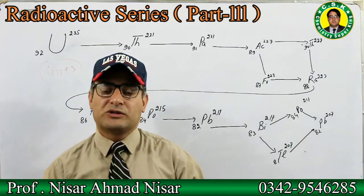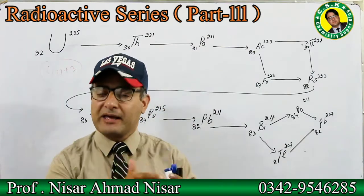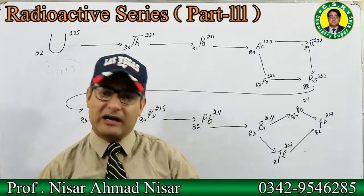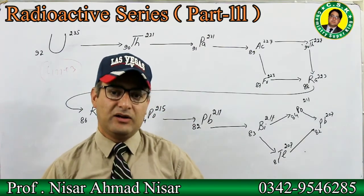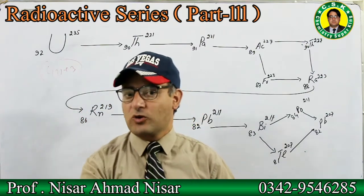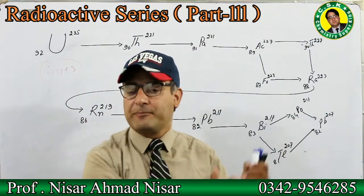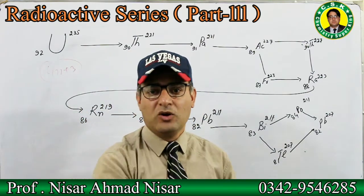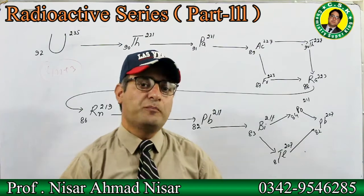In this series, when an alpha particle is emitted, the atomic number decreases by 2 and the mass number decreases by 4. When a beta particle (negatron) is emitted, the atomic number increases by 1 and the mass number remains constant. When two alpha particles and two beta particles are emitted together, we get an isotope.